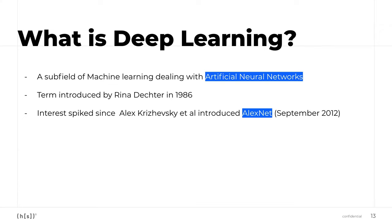What is deep learning? Deep learning is a subfield of machine learning specifically concerned with training artificial neural networks. The term was introduced in 1986, and interest spiked around 2012 when Alex Krizhevsky introduced AlexNet to solve the ImageNet challenge. This was one of the first deeper neural network architectures able to handle image classification, and it introduced a significant improvement over previous state-of-the-art results.